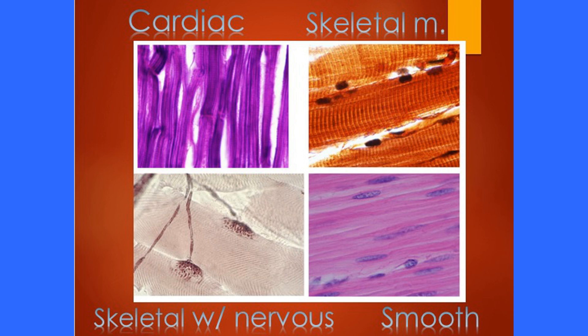Skeletal muscle is known as being multi-nucleated, meaning it has many nuclei per cell. This breaks the general rule that cells are supposed to have one nucleus per cell. In the human body there are two exceptions: skeletal muscle, which is multi-nucleated, and red blood cells, which lack a nucleus — they give up that nucleus.